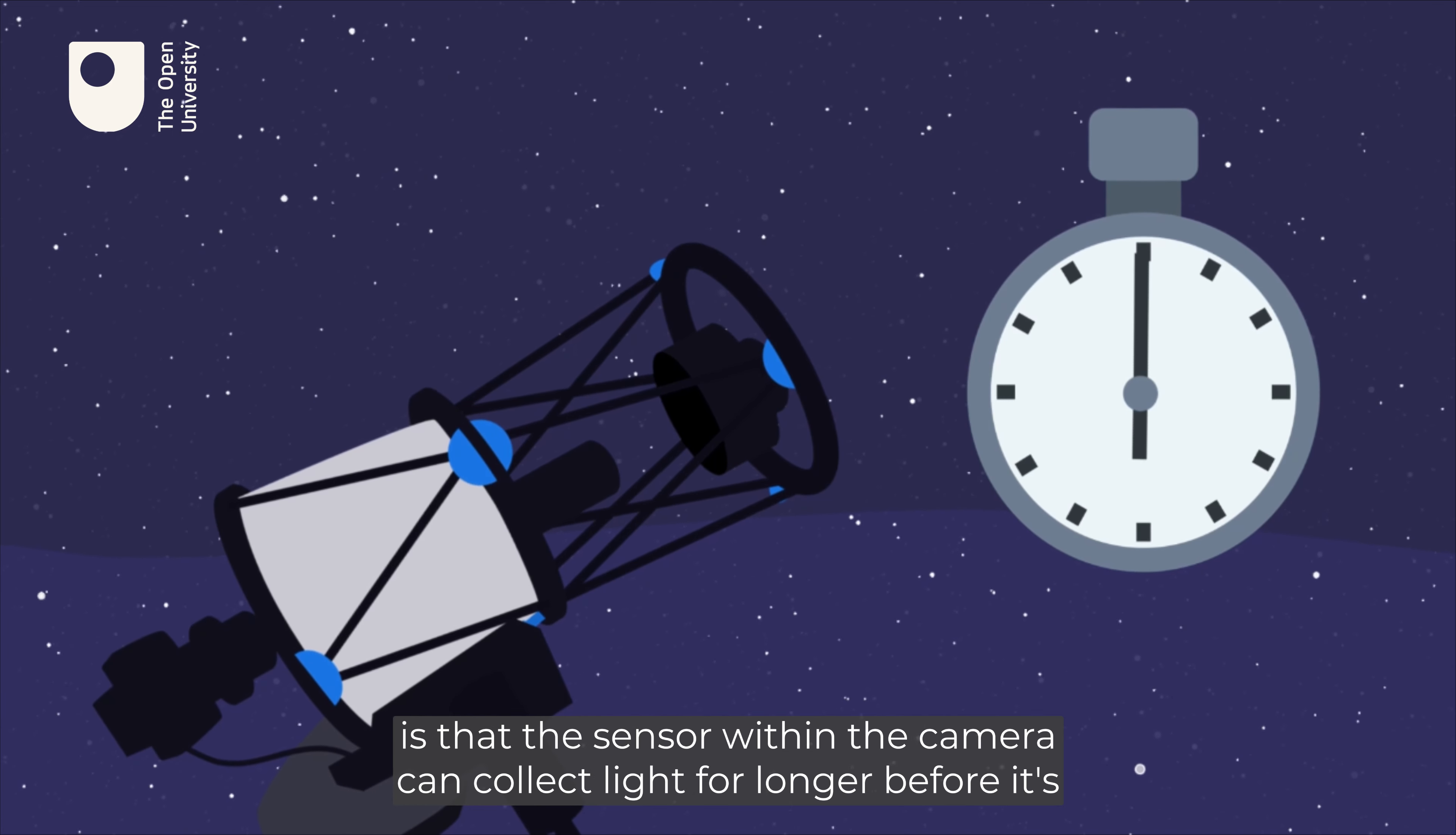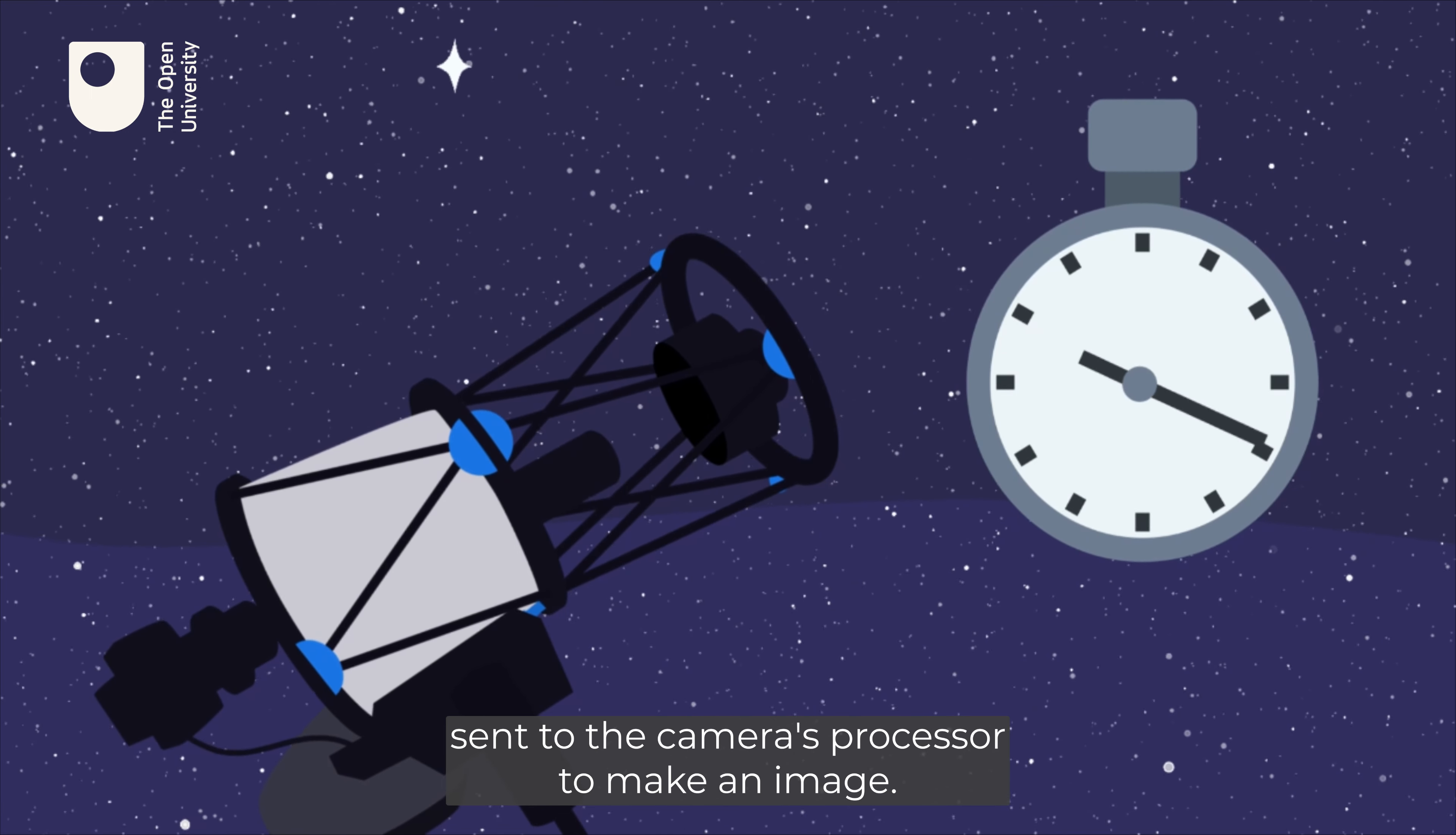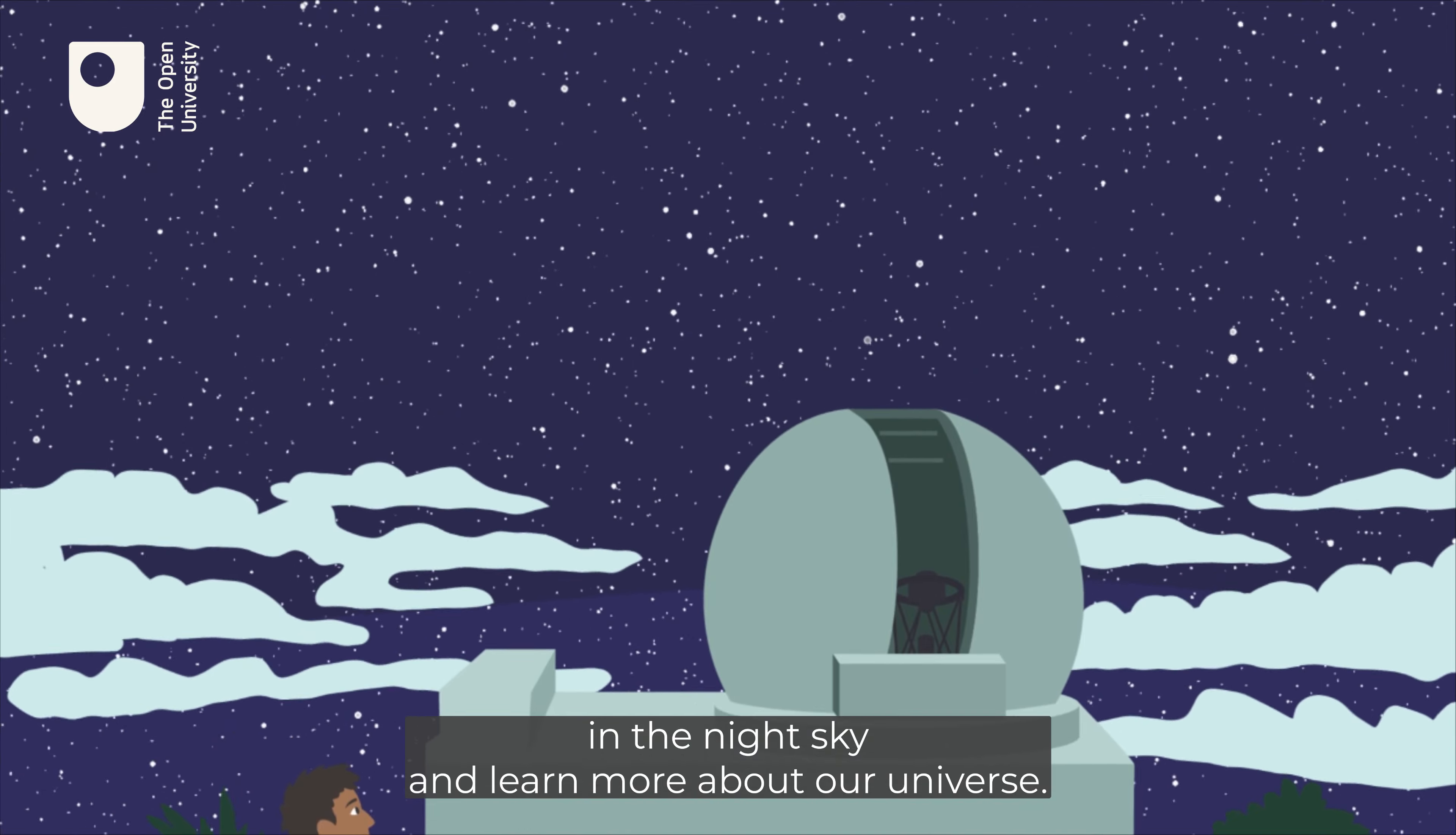By collecting more light, dim things become visible and more features can be seen. The image that's collected can be seen through the eyepiece on some telescopes or on an imaging sensor, which could be a digital camera.